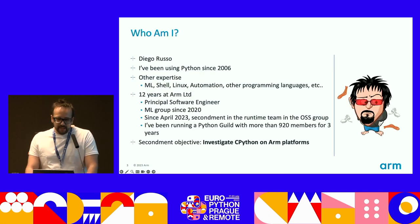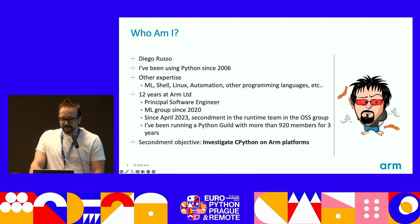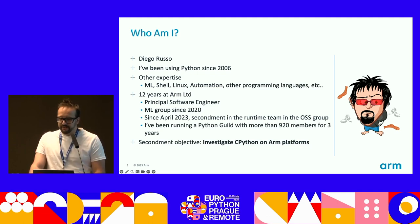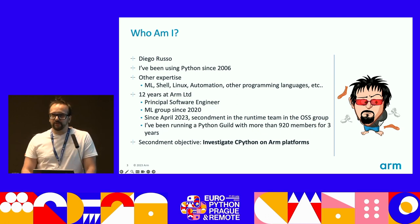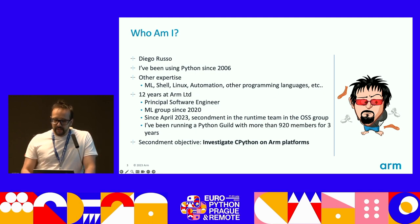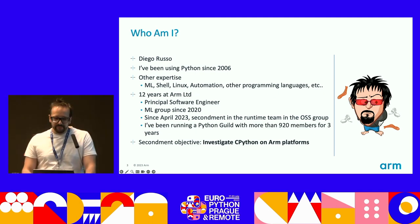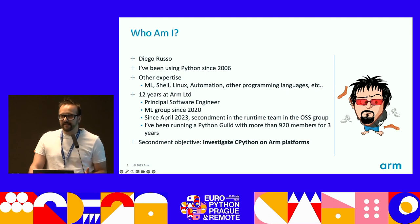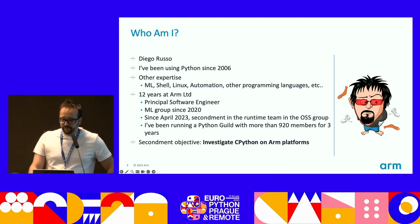Let me start by introducing myself. My name is Diego Russo. For my entire career, I've been using Python in a variety of environments. In the last 12 years, I've been working at ARM in Cambridge. During this time, I've been in different departments, and since 2020, I've been in the machine learning group.